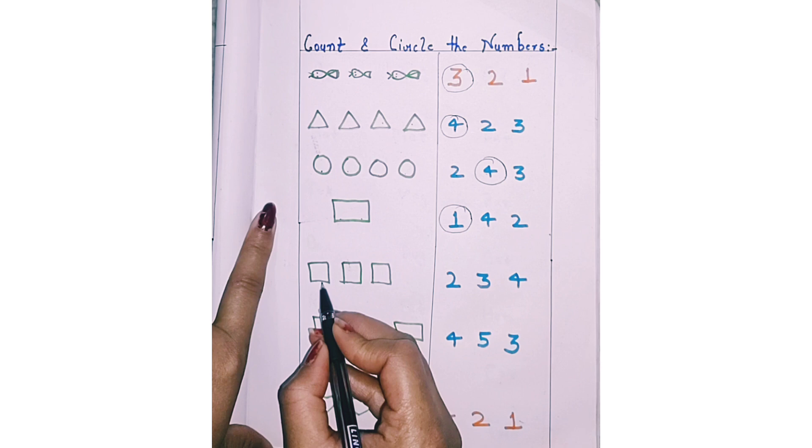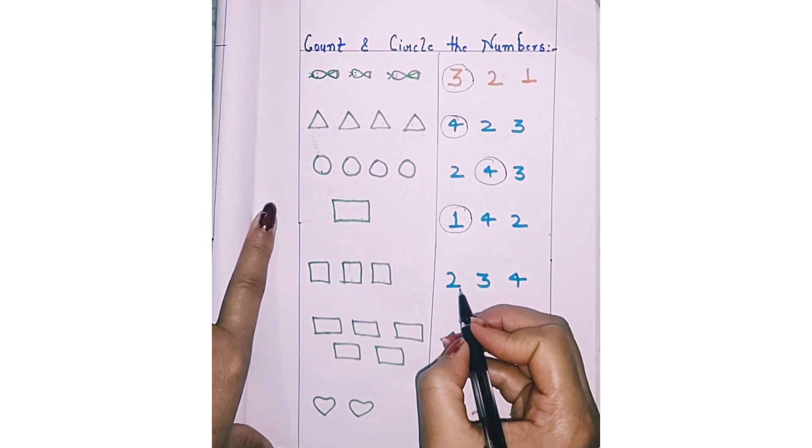Next. How many squares are there? 1, 2, 3.